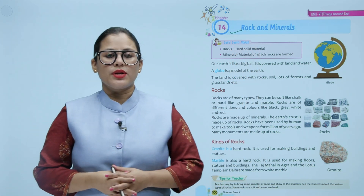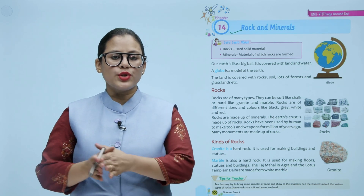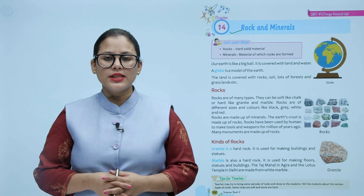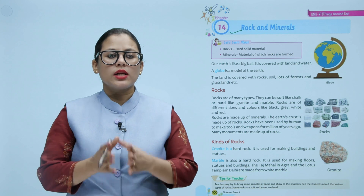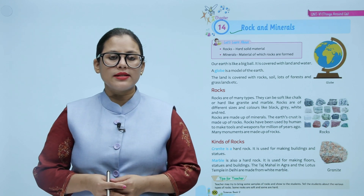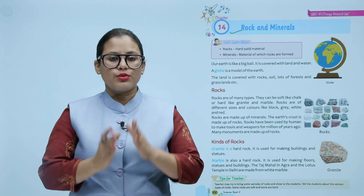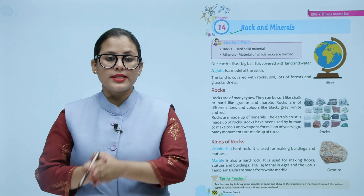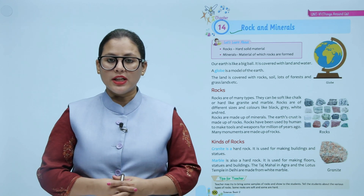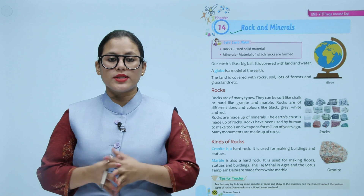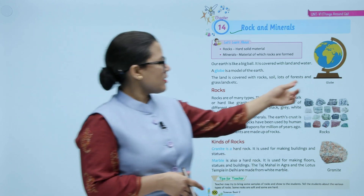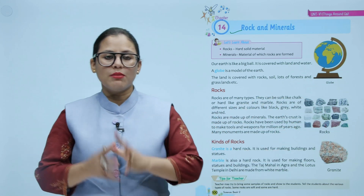Let's learn about rocks — hard solid material — and minerals, of which rocks are formed. Earth is like a big ball. It is covered with land and water. A globe is a model of the earth. The land is covered with rocks, soil, lots of forest and grassland, etc.